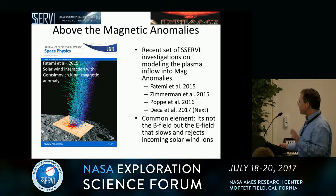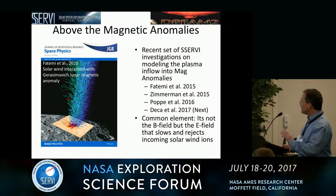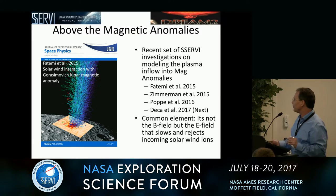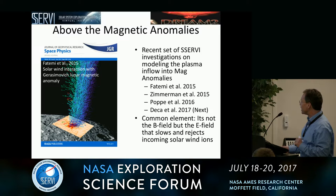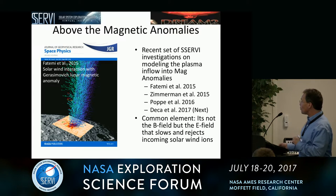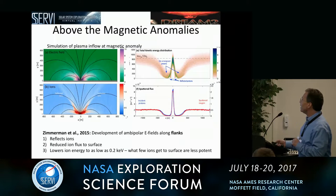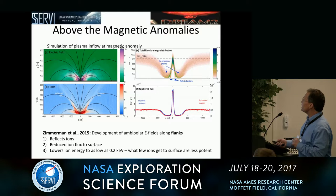There seems to be a common element. While there's a magnetic field, it's actually not the magnetic field that directly affects the incoming protons. It's the formation of this electric field that tends to decelerate and reject these incoming solar wind ions. The electric field is formed by the magnetic field, but it's the electric fields that are doing the work. This is from Mike Zimmerman's 2015 paper on a small magnetic anomaly.